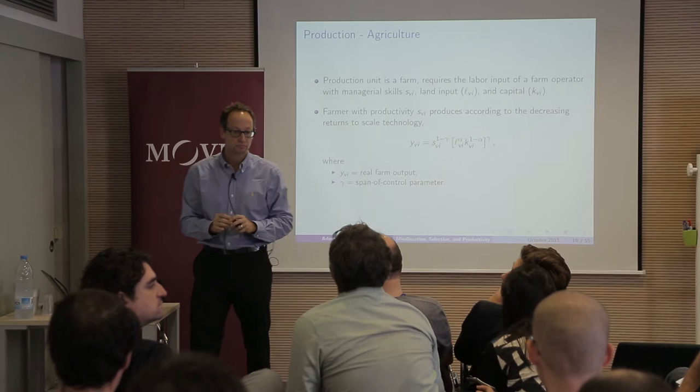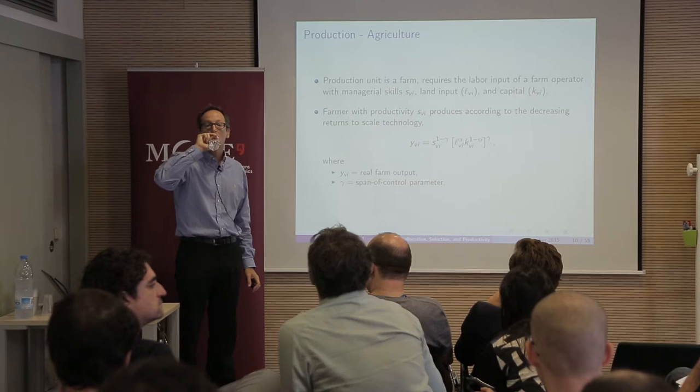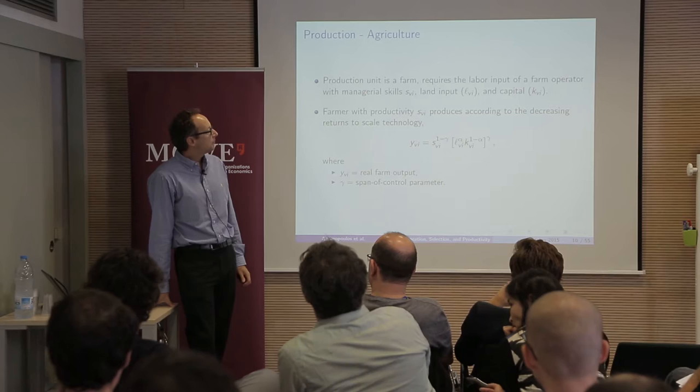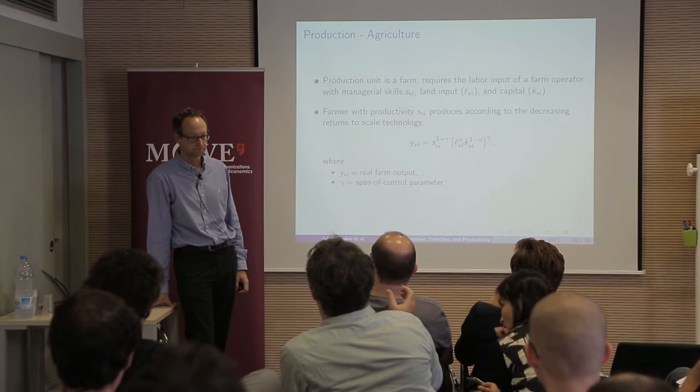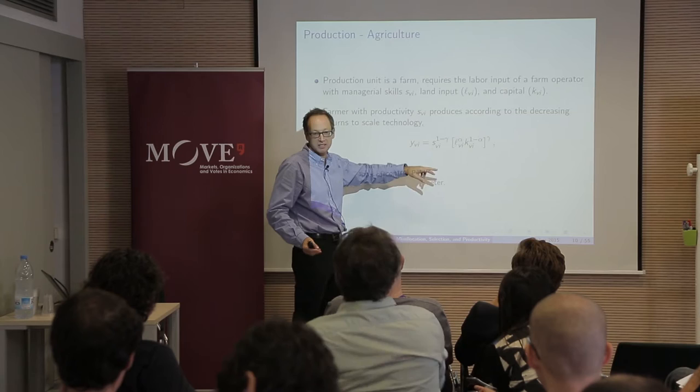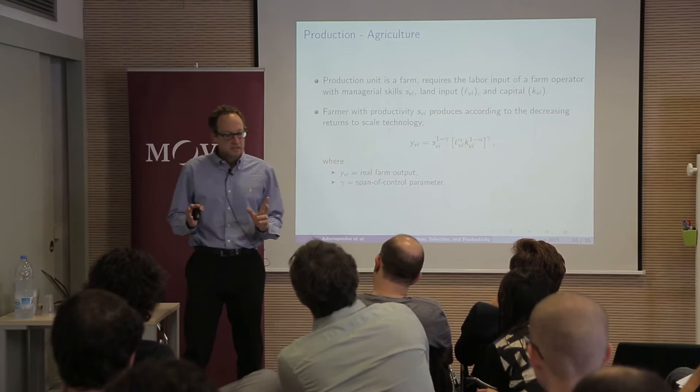Within a village there are huge differences in the quality of land — who gets the good land and who gets the bad land is another dimension of misallocation. If it's all land quality, then the reallocation exercise is not valid, because it's the quality of land that matters rather than the manager. If you put everything into measured productivity, it may just capture land quality differences.